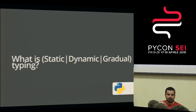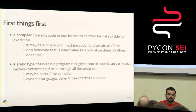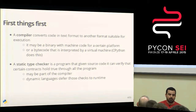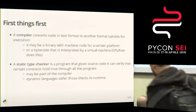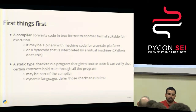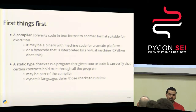So what are these terms? First, a couple of definitions. A compiler takes a program in text format and converts it to another format that is suitable for execution. It may be a binary with machine code for a certain platform, or as in Python, it may be bytecode that is then interpreted by a virtual machine.